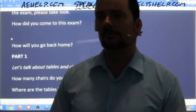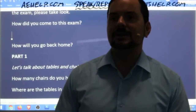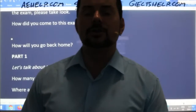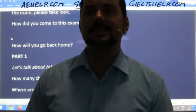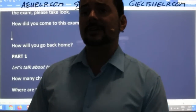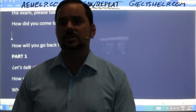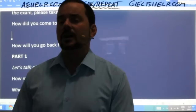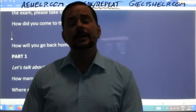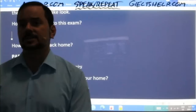One student got an overall band seven. A band seven means you are a good user of the English language — that's fantastic. According to the European levels, that's a solid B2 moving to C1 level, and you should be proud of that.